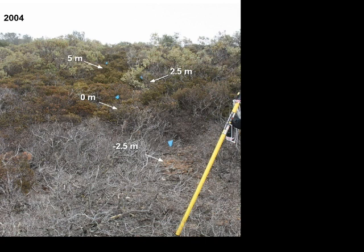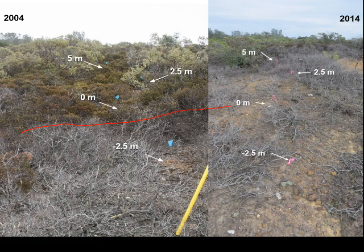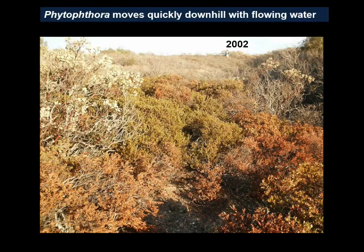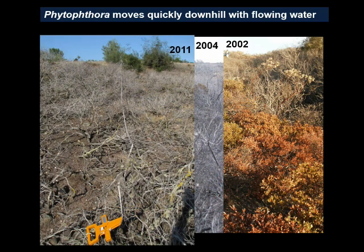This and other transects were set up in Island Manzanita habitat to look at the rates of spread. We started with the disease front right along here and followed that over time. Within 10 years, the disease front is now well beyond this five-meter mark. We've had on average across multiple transects a rate of spread from root to root on the order of a meter per year on the level or uphill. Downhill spread can occur quicker because of the additional effect of overland flow, especially in an erodible site with a lot of bare soil that can be washed down in heavy rainfall.